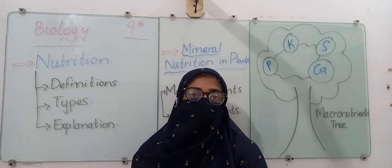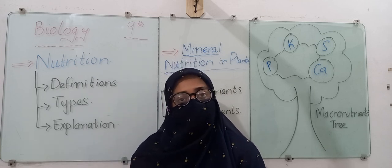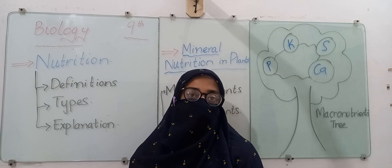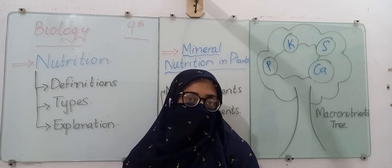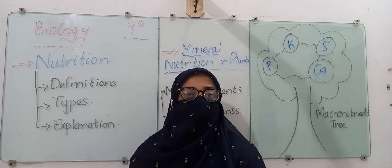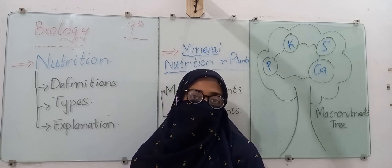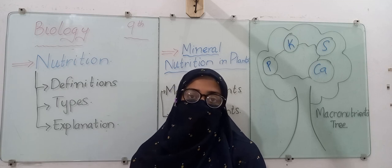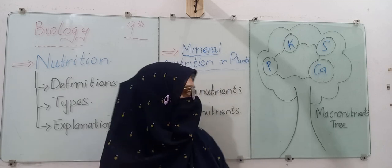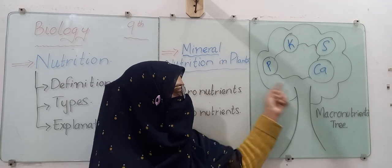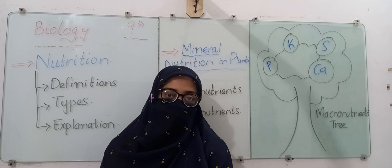Finally, we discussed nutrition in plants — that plants also require certain minerals in their diet. These minerals are sometimes required in higher quantities, called macronutrients, and sometimes in lower quantities, called micronutrients. In the next lecture we will discuss four important macronutrients present in the plant body and their functions. Thank you.